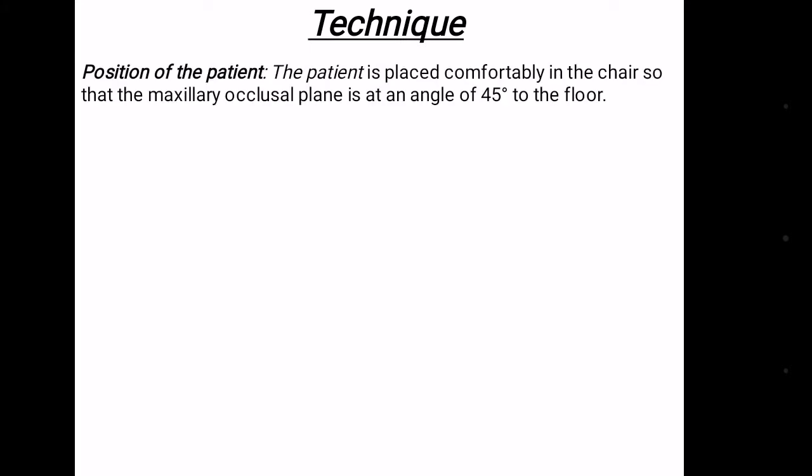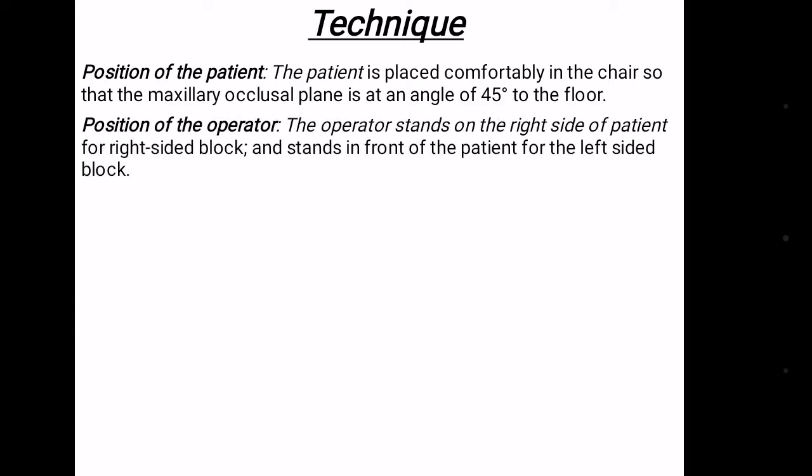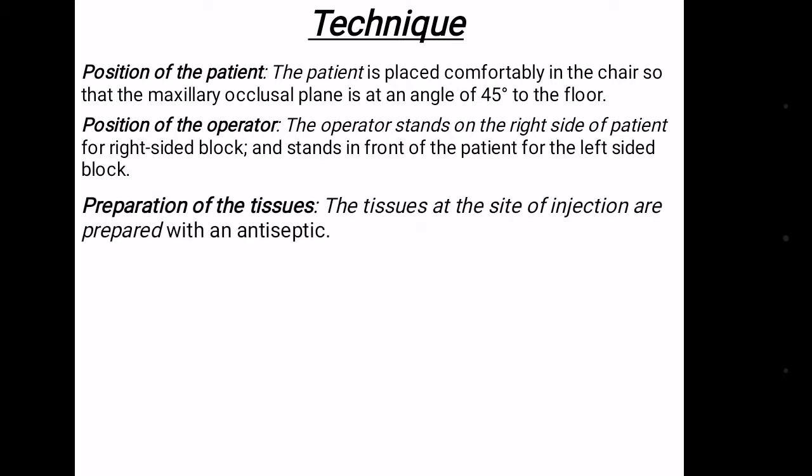The patient is placed comfortably in the chair so the maxillary occlusal plane is at a 45-degree angle to the floor. The operator stands on the right side of the patient for a right side block and stands in front of the patient for the left side block. The tissue at the site of injection is prepared with an antiseptic.